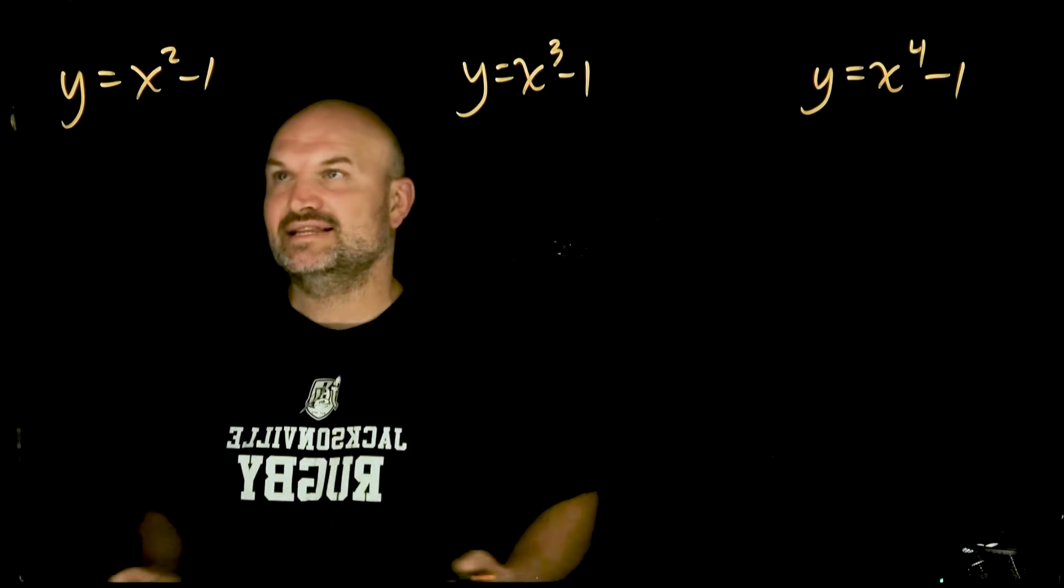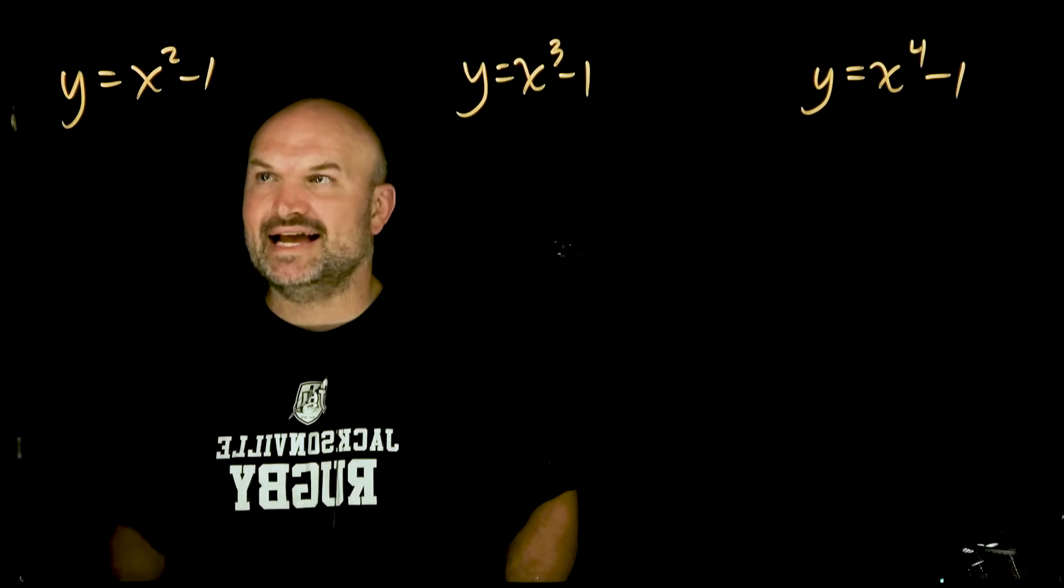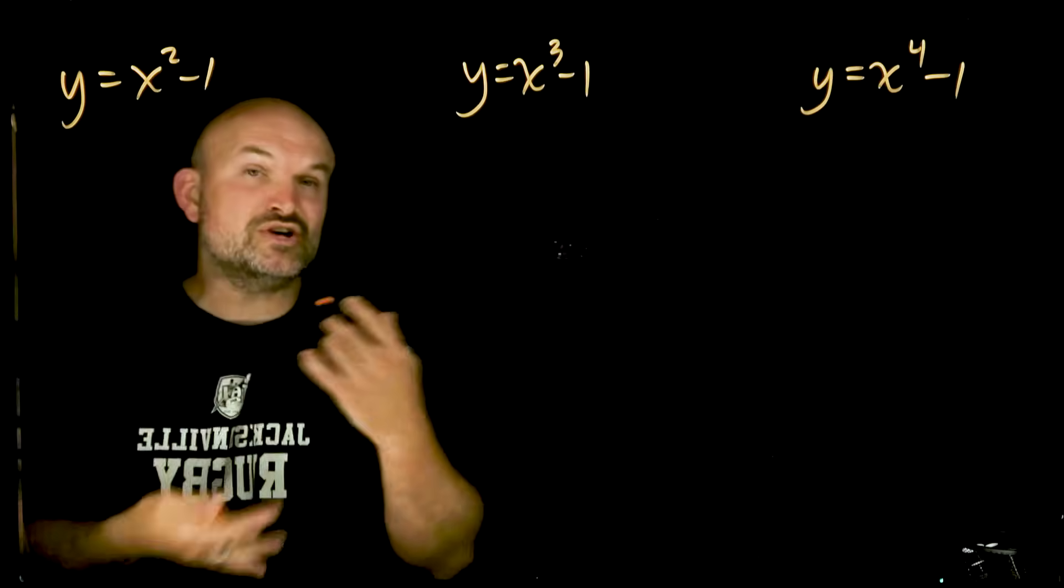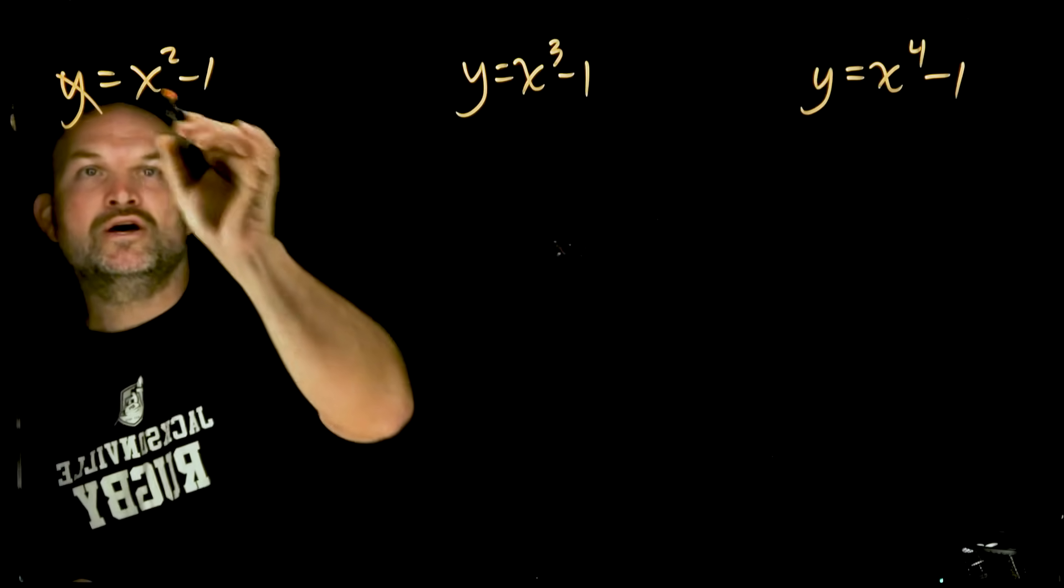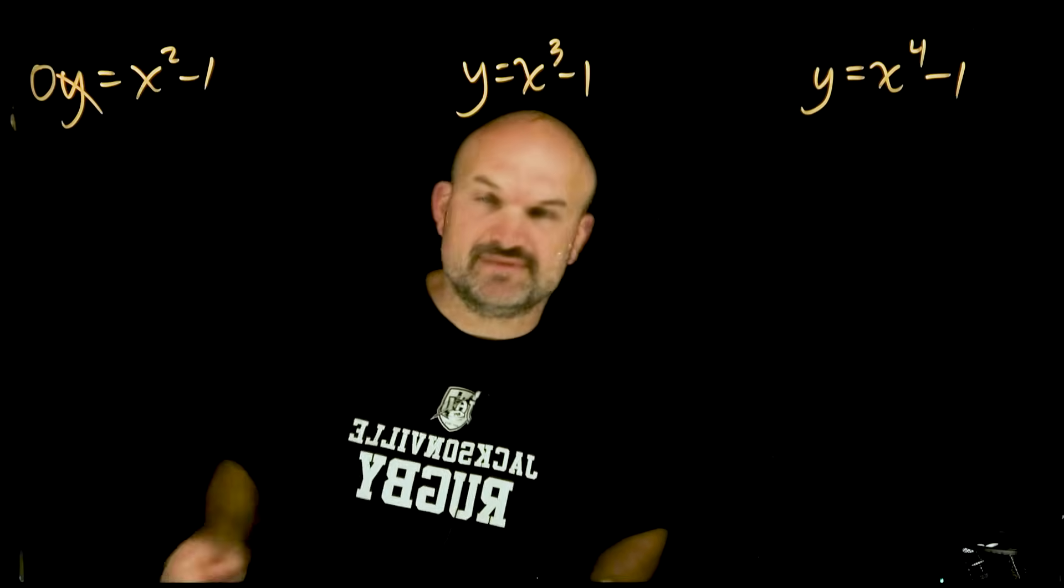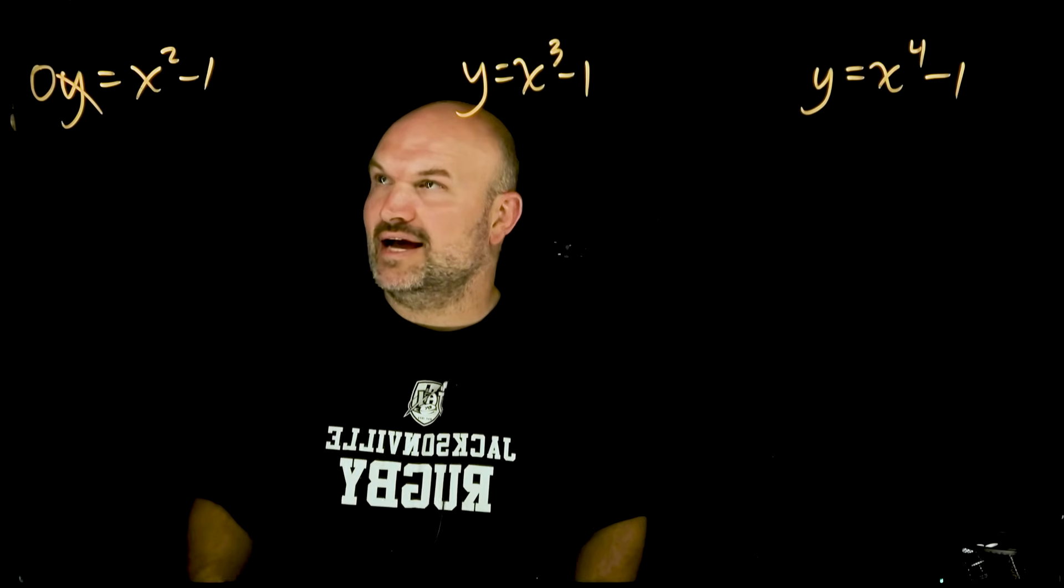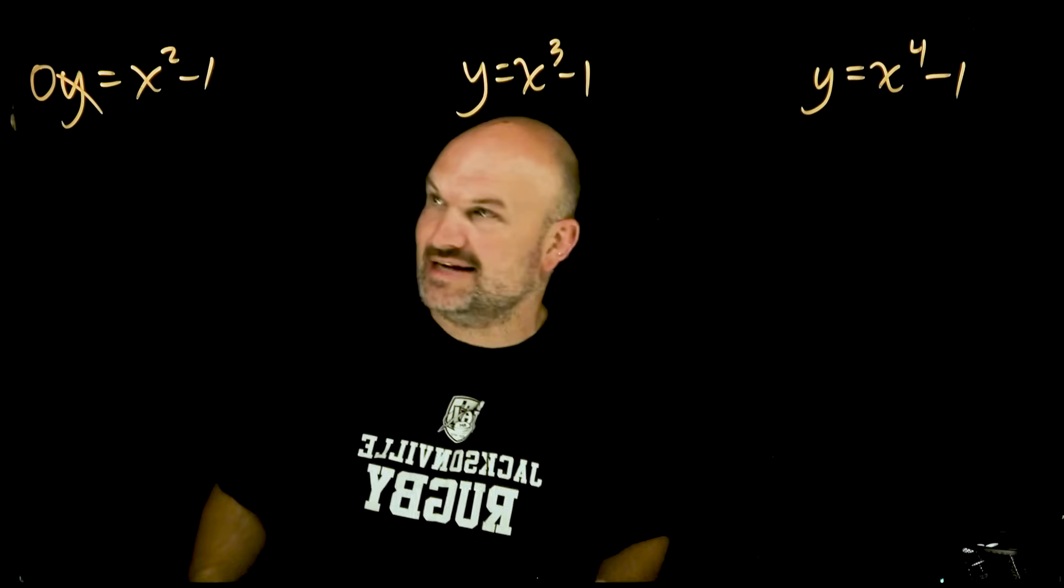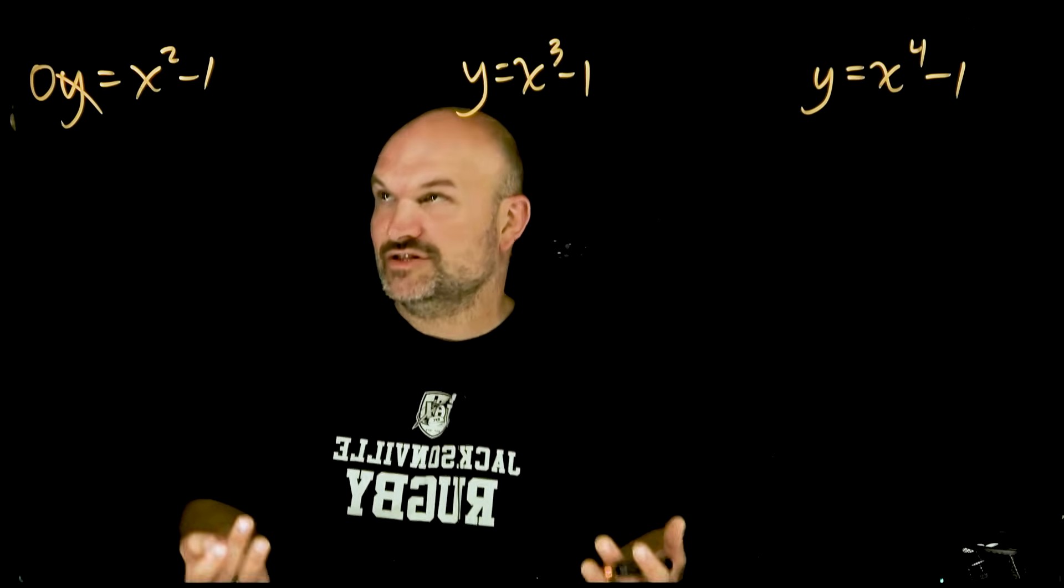So let's first look at y equals x squared minus one and just refresh ourselves on how to find the zeros of a polynomial like this. When we're trying to find the zeros, we're trying to find the values when our expression x squared minus one is going to equal zero. So I can replace y with zero. You could use a square root method, but I want to focus on our factoring techniques.